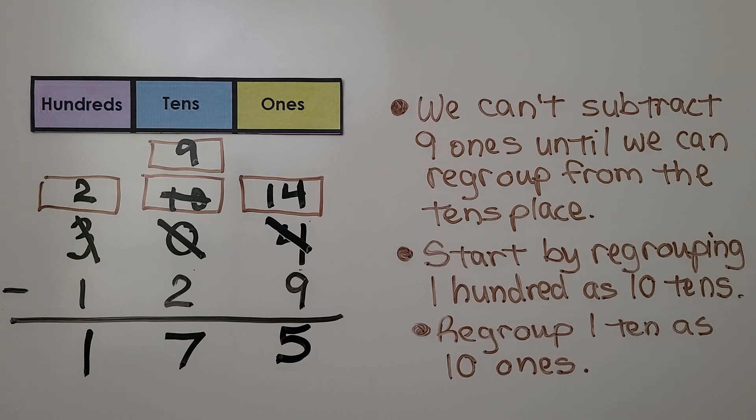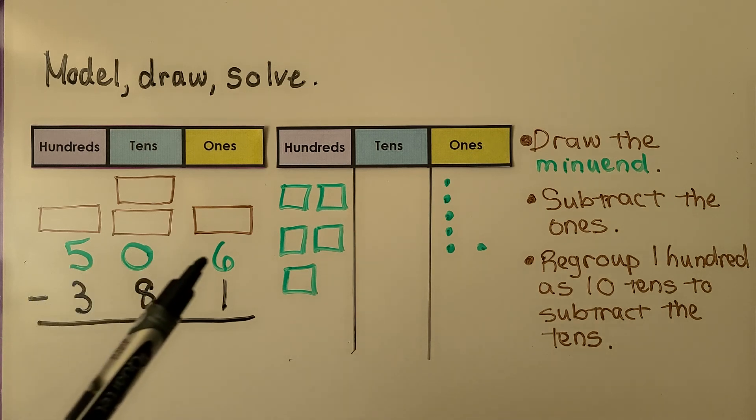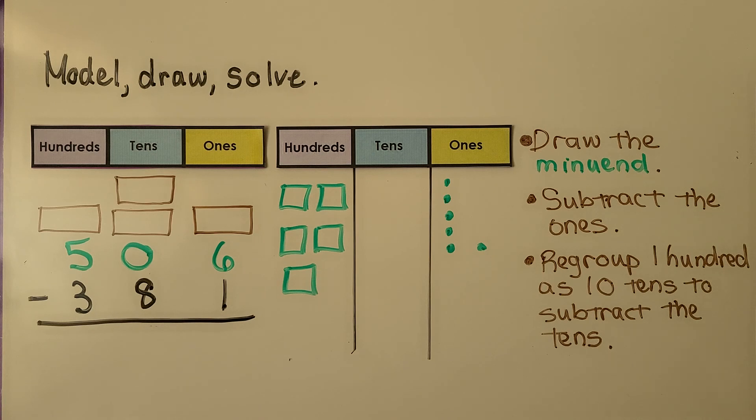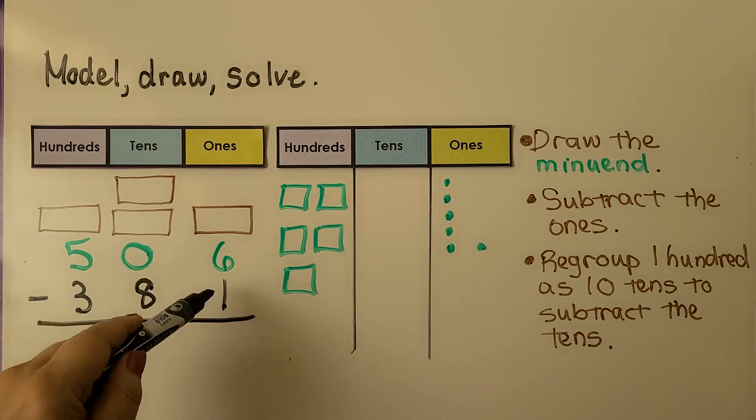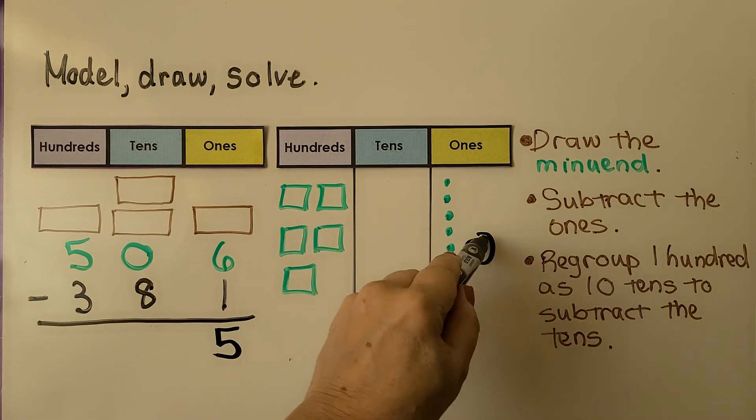Let's try it again with a different example. We're going to model, draw, and solve. We have five hundred six minus three hundred eighty-one. We start by drawing the minuend, five hundred six. We have five hundreds, zero tens, six ones. We subtract the ones. We have six ones. We need to take one away. Well that's easy. That's five. We're just taking this one away.